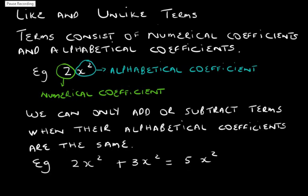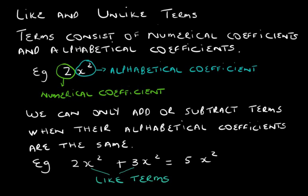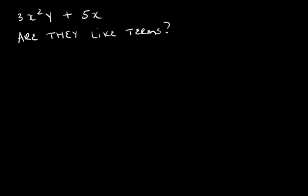We can only add or subtract terms when the alphabetical coefficients are the same. For example, 2x squared plus 3x squared is equal to 5x squared. Now 2x squared and 3x squared are called like terms.